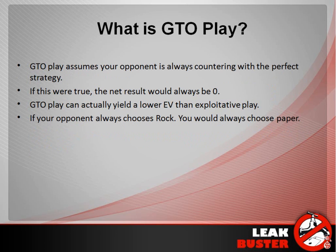In game theory optimal play, we assume our opponent is always countering with the perfect strategy and the net result would always be zero. We use that as a baseline — assuming we know and can find where that perfect balance is. When our opponent deviates from that, then we start to switch more to exploitative play. That's why GTO can actually yield a lower expected value than exploitative play, because you should start recognizing when your opponent isn't coming up with the perfect counter strategy and exploit that instead.